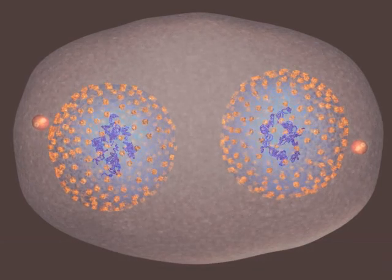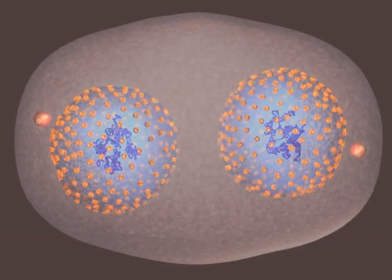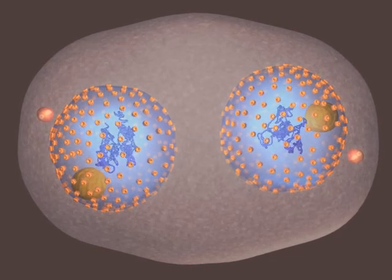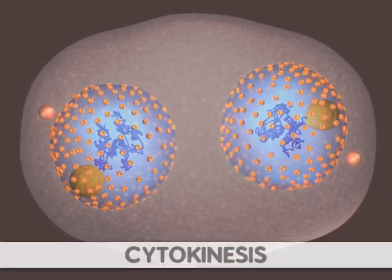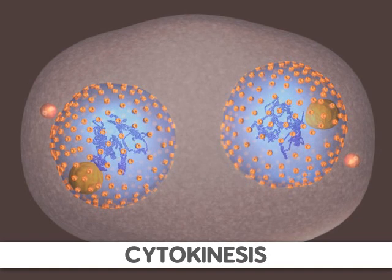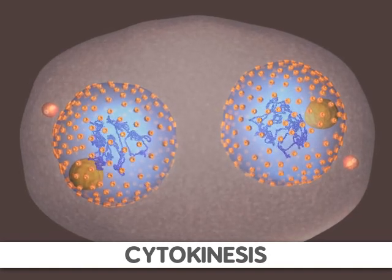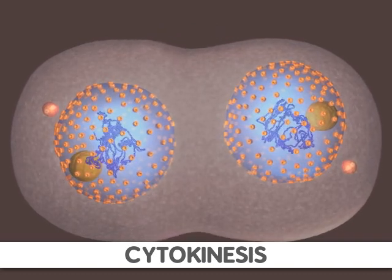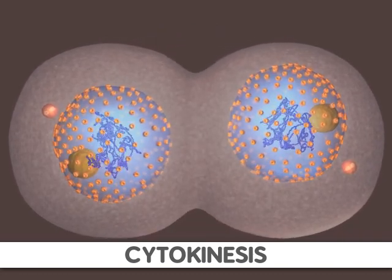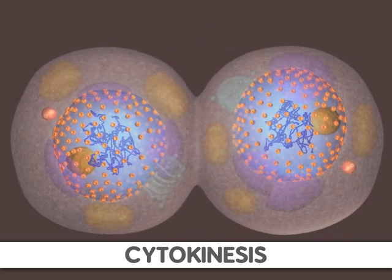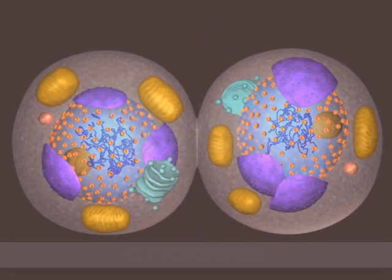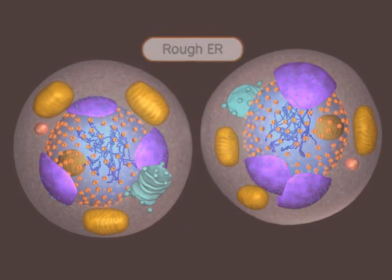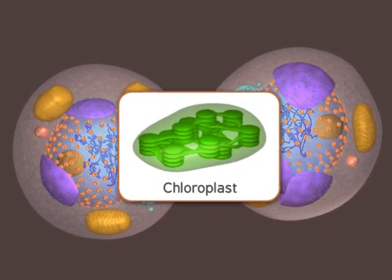Mitosis is now complete. The formation of two cells is all that remains. Following mitosis, the cell undergoes a process called cytokinesis. First, the cell is compressed by a contractile ring that divides the cell in nearly equal halves. By now, the organelles in the cell have been replicated and are divided between the two halves, including mitochondria, Golgi bodies, and the rough ER. Plant cells also have chloroplasts.